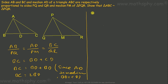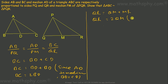Similarly, QR is equal to QM plus MR, so QR is equal to 2QM, since PM is the median for QR.